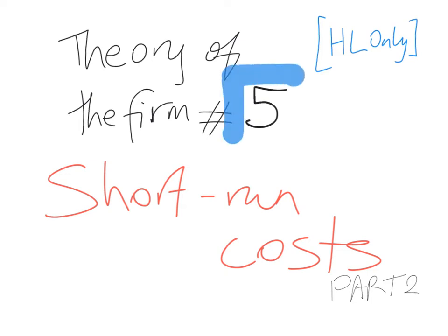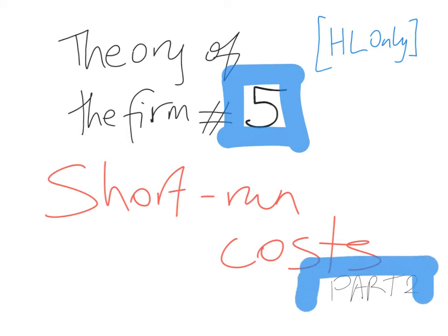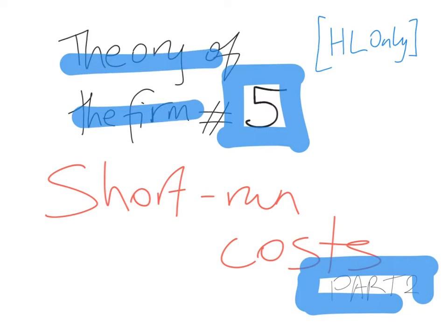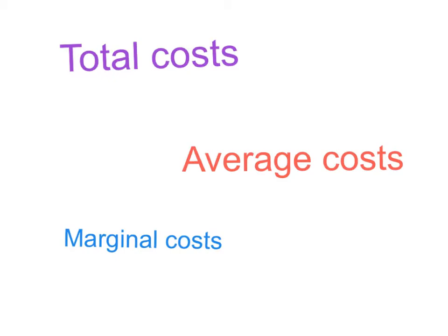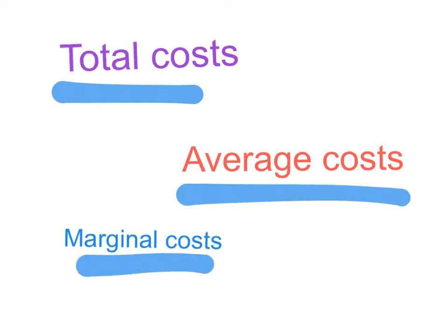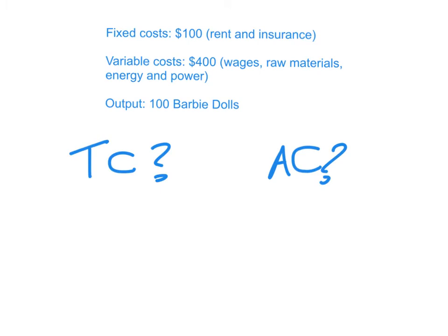This is video number five of the theory of the firm series, and it's actually part two of the short-run costs of production. There have been four previous videos in this series, and I've just uploaded part one of short-run costs. Remember, this is IB economics higher level only. The first thing I'm going to do is distinguish between total costs, average costs, and marginal costs.